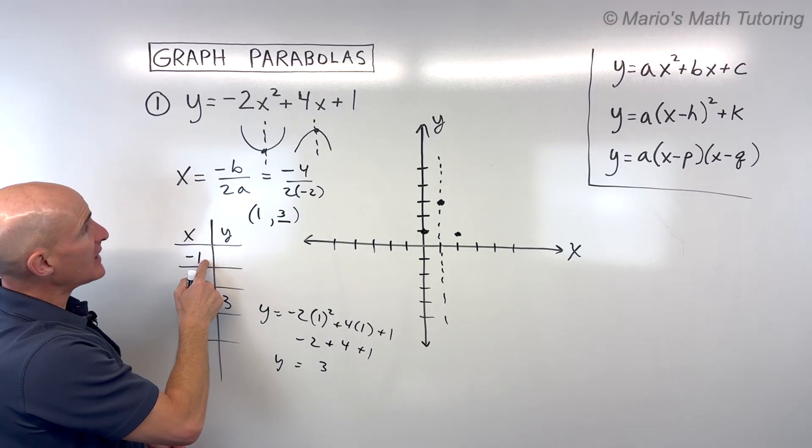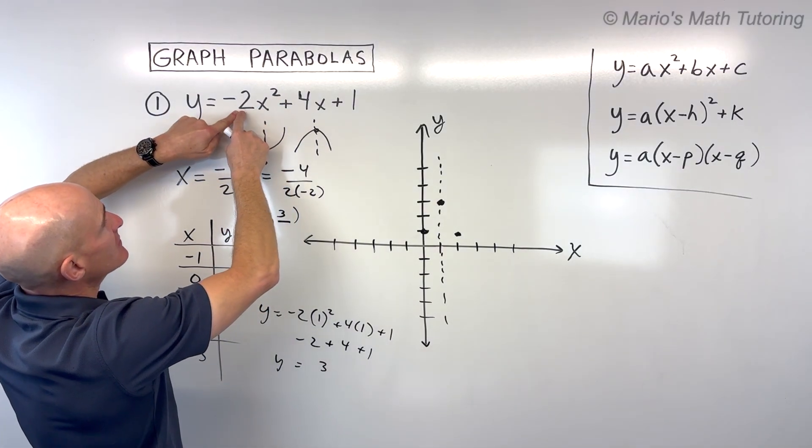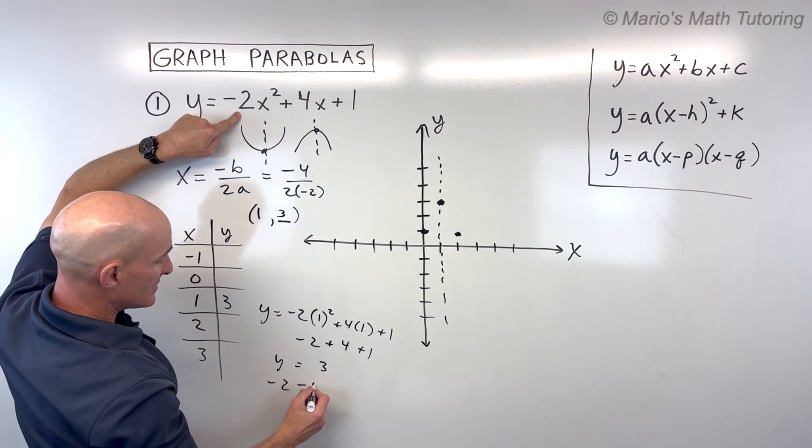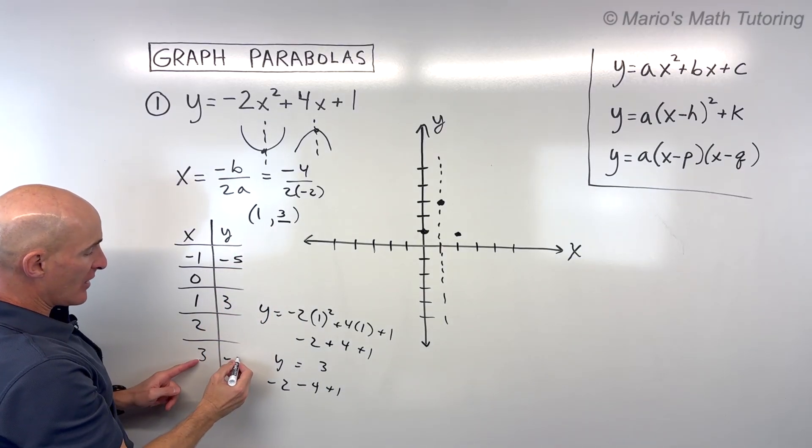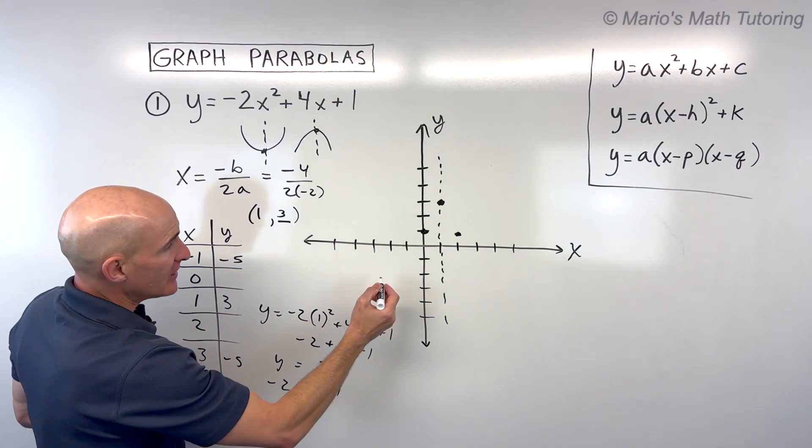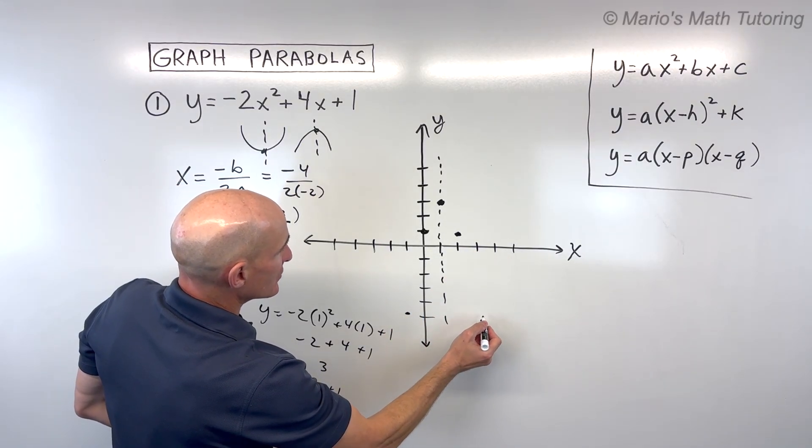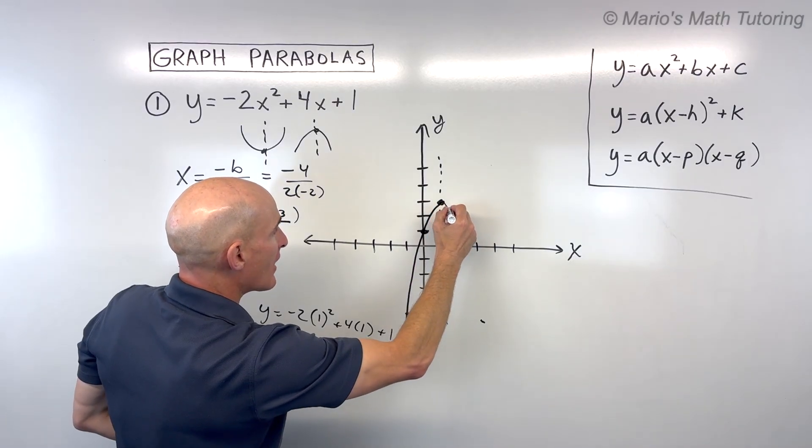If we plug negative 1 in, let's see what we get. Negative 1 squared, which is 1, times negative 2 is negative 2. 4 times negative 1 is negative 4. So if we combine these together, we get negative 5. That means that over here at 3, it's also going to be negative 5. So let's plot that. Now we have a pretty good sketch. We've got 5 points. You can usually get a good graph with 5 points.